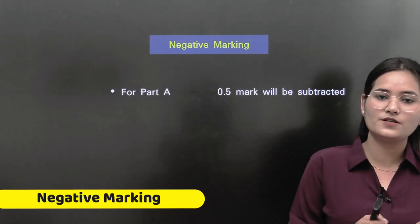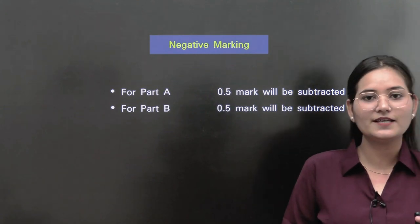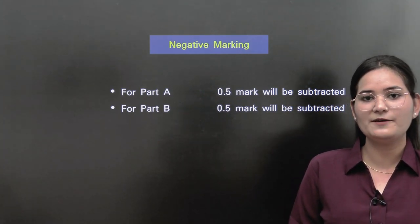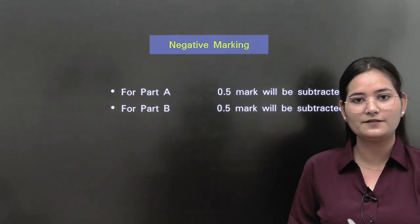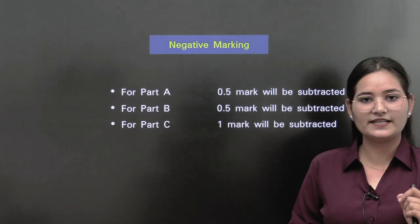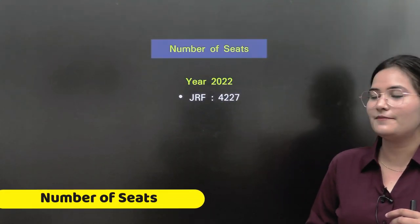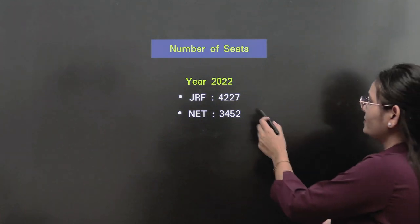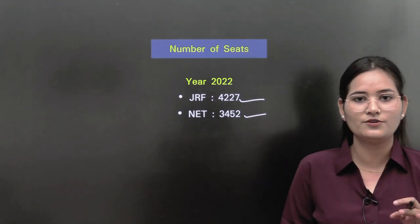Since CSIR is an all India level examination, negative marking applies. In Part A and Part B: correct answer gives 2 marks, wrong answer deducts 0.5 marks. In Part C: correct answer gives 4 marks, wrong answer deducts 1 mark. Regarding number of seats — based on previous year data from 2022 — total seats for JRF were 4,227 and for NET were 3,452.